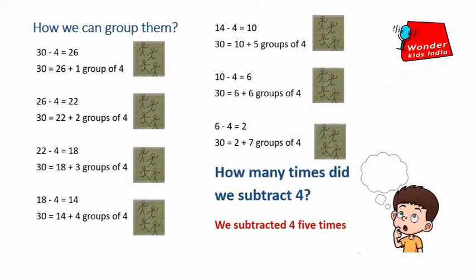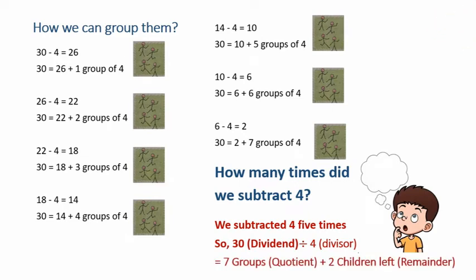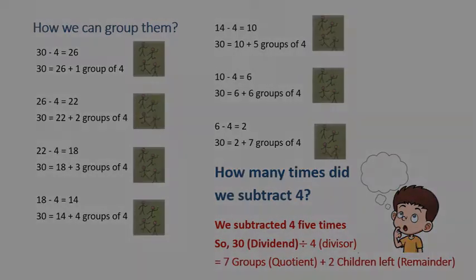Here, 30 is the dividend and 4 is the divisor. And 7 is the quotient and 2 is the remainder.